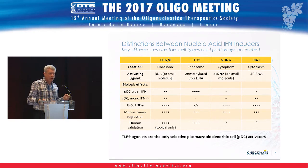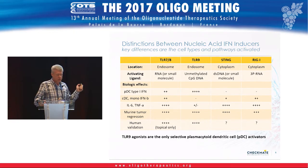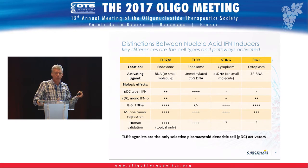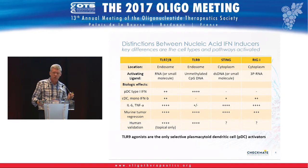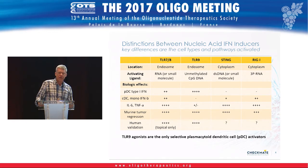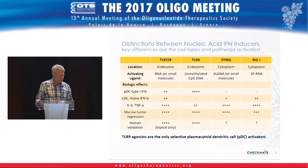In mouse tumor models, basically everything works and it's very easy to get tumor regression. But in terms of validation in humans, only the TLRs have been validated. For TLR7/8 there is an approved small-molecule drug delivered topically to treat skin cancers, and CpG oligos have shown efficacy in human trials though not yet approved. STING and RIG-I are in the clinic, with results expected this year or next.